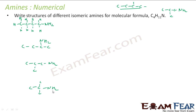So these are all my primary amines — all nitrogen atoms have two hydrogens. We have the straight four-carbon chain, then NH2 attached at a different position, then two branched four-carbon variants. These are all my four primary amine structures.